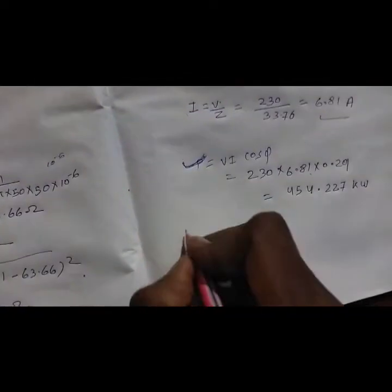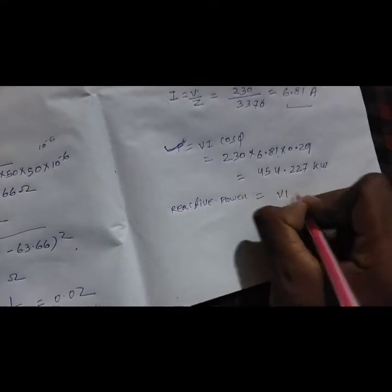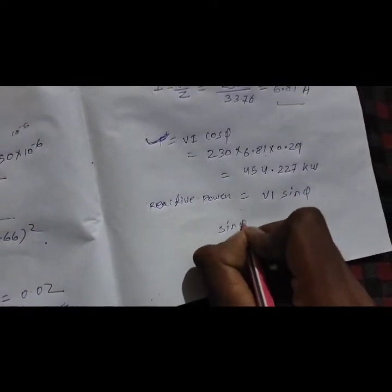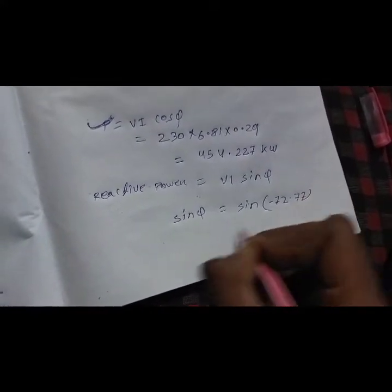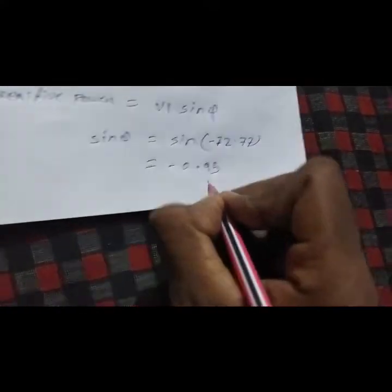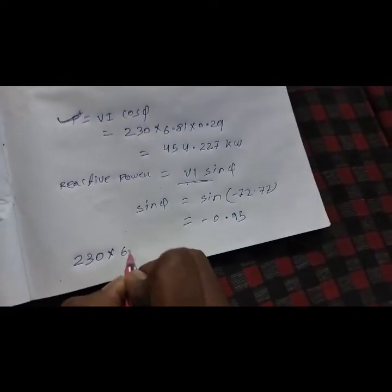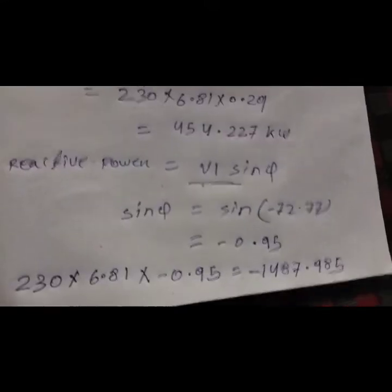Find reactive power. Reactive power = V × I × sin φ. First find sin φ: sin(-72.77°) = -0.95. So reactive power = 230 × 6.81 × (-0.95) = -1487.985 VAR.